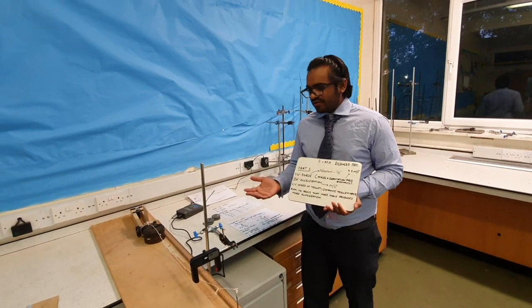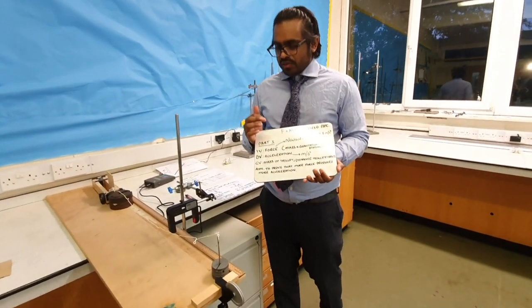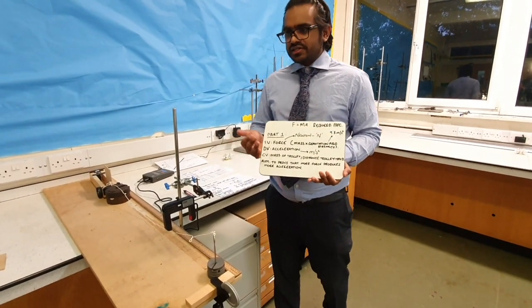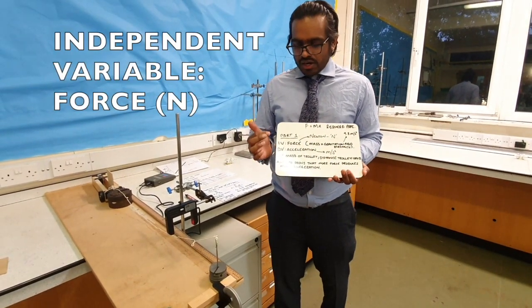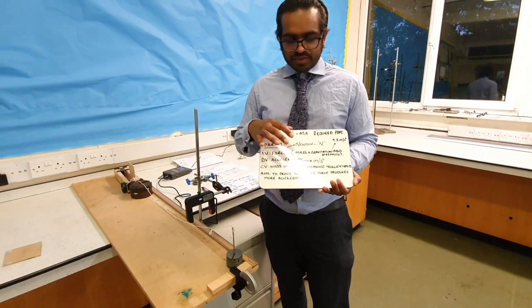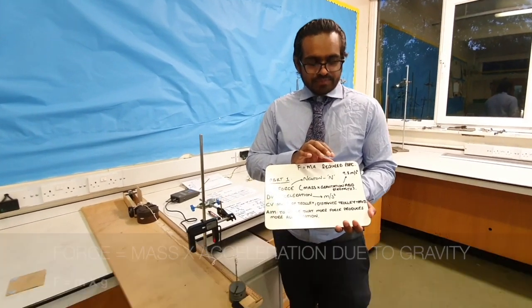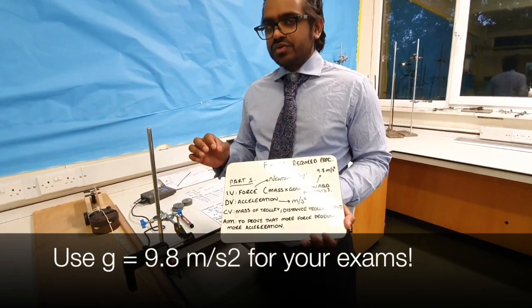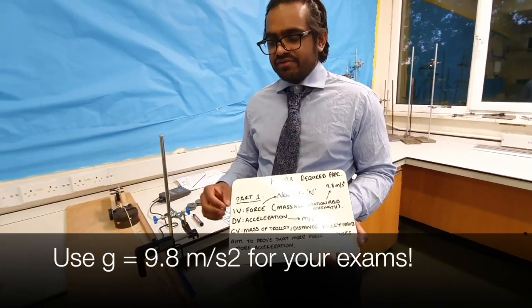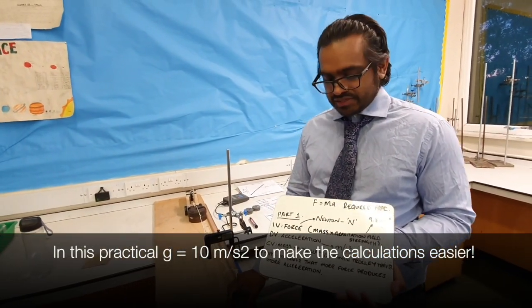Here we have part one of the required practical of F equals ma. Before we carry on further, let's identify our variables. Our independent variable is the force. In order to calculate the force we do mass times gravitational field strength, which is 9.8 meters per second, but for this required practical we're going to say our gravitational field strength is 10 meters per second.